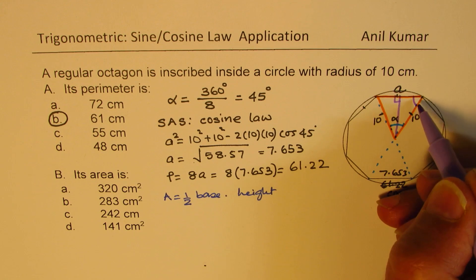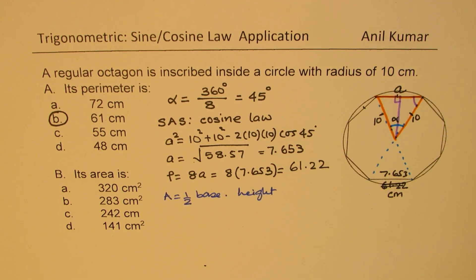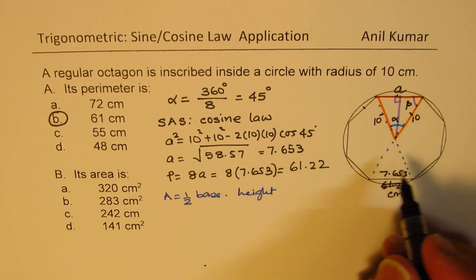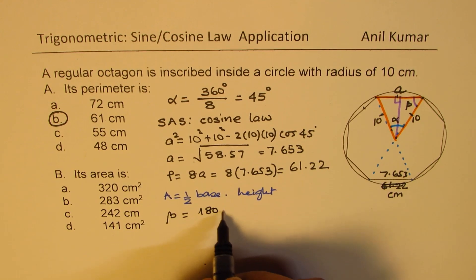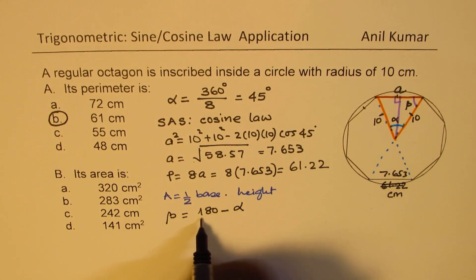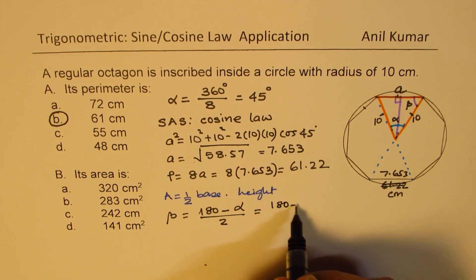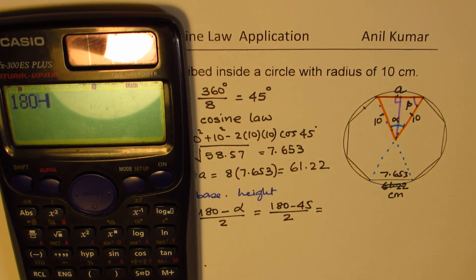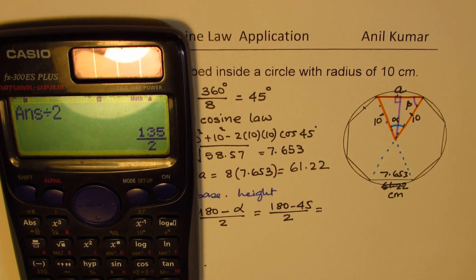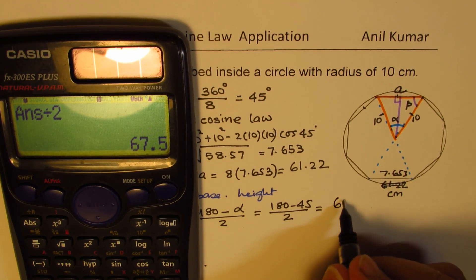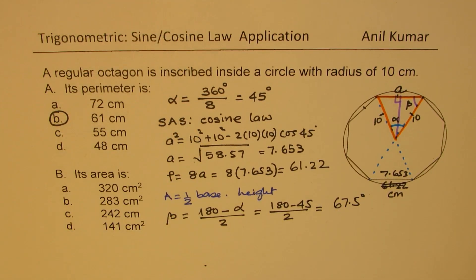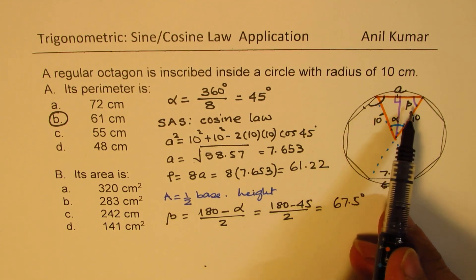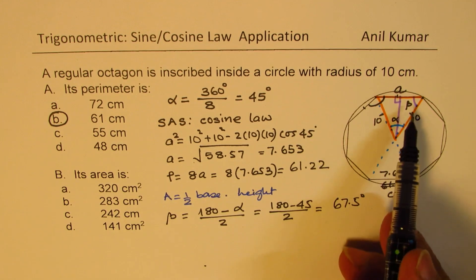This central angle alpha is 45 degrees. The base angles, let's call them beta, can be found as: beta = (180 − alpha) / 2 = (180 − 45) / 2 = 67.5 degrees. Alternatively, the two base angles together are 135 degrees, so each is 67.5 degrees.